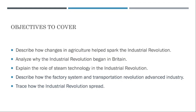To begin, we're going to take a look at how changes in agriculture were instrumental in sparking the Industrial Revolution. Agricultural innovations in the 18th century, such as the enclosure movement, crop rotation, and selective breeding of livestock, increased agricultural productivity. These advancements led to surplus food production and a smaller agricultural workforce. This surplus labor, no longer needed in the fields, migrated to urban areas, creating a pool of available workers for emerging industries.